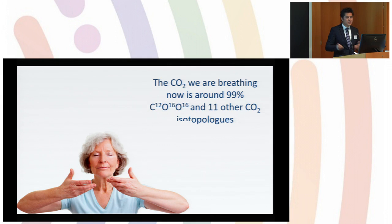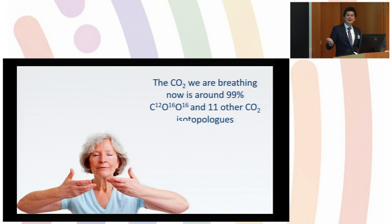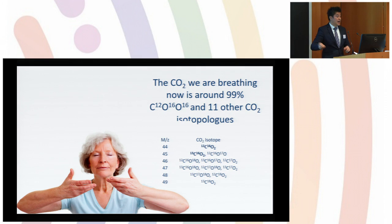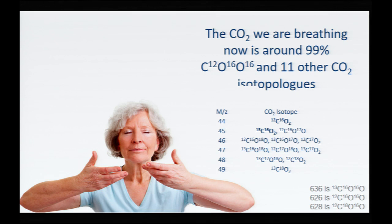What is CO2? The CO2 in the atmosphere now contains around 400 micromole per mole, while in this room a little bit more — 420 probably. And 99% of this CO2 is carbon-12, oxygen-16, oxygen-16. Around 1% is carbon-13, oxygen-16, oxygen-16, and these other ten isotopologues. To make this talk faster, we will refer to 636 for carbon-13 O-16 O-16, 626 for carbon-12 O-16 O-16, and 628 for carbon-12 O-18 O-16. This is the notation of the spectroscopic community.